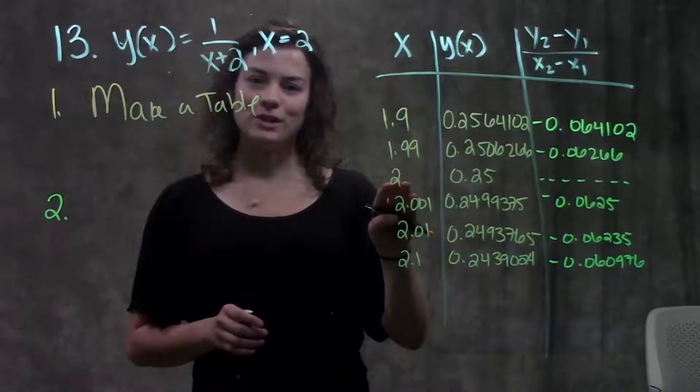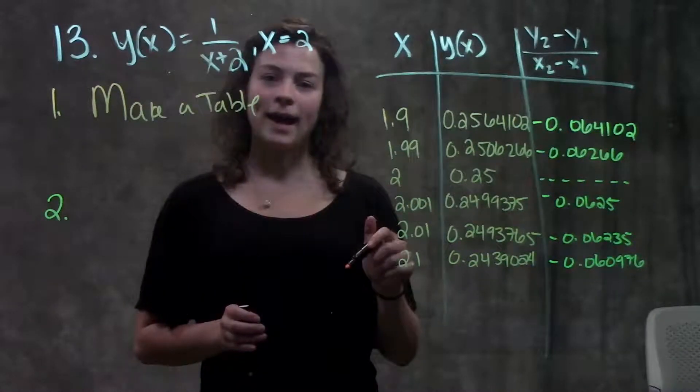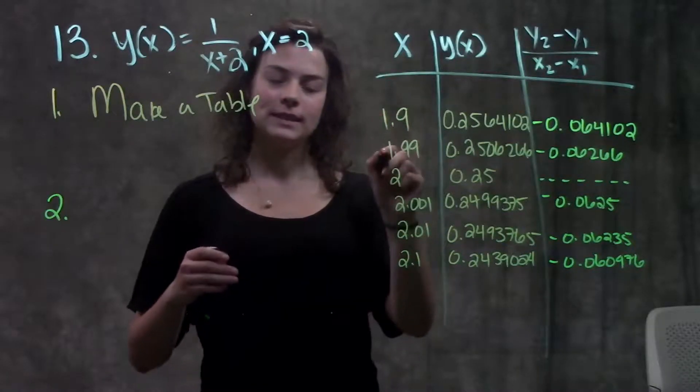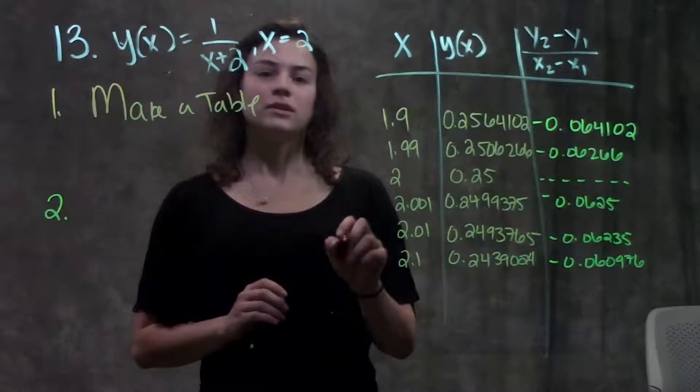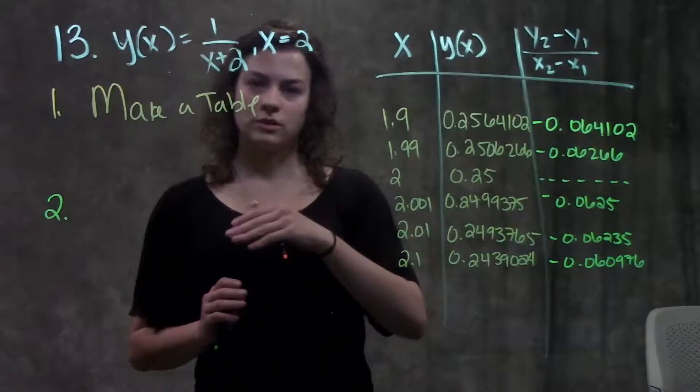Our point of interest is x equals 2, and when we're estimating the slope at x equals 2, we want to plug in x values approaching 2 from both the left hand side and the right hand side. As you see, going from the left it keeps getting closer to 2, just like from the right it keeps getting closer and closer to 2.